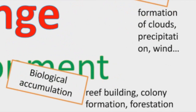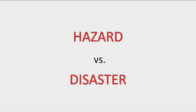The last process is biological accumulation. This includes reef building or reef formation, which happens when coral larvae attaches to a rock and the coral grows and expands. We also have colony formation — the growth in numbers of organisms — and forestation, which is the establishment of forest growth.